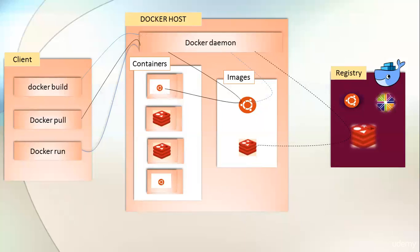Because images are so lightweight, when you pull one it downloads in a fraction of a minute and you can easily create a container and start your work. For example, if I want Python 3.4, instead of installing the OS and setting up the environment manually, I just search for Python 3.4 on Docker Hub, pull it via the Docker daemon, and write my code directly. This saves a lot of time.